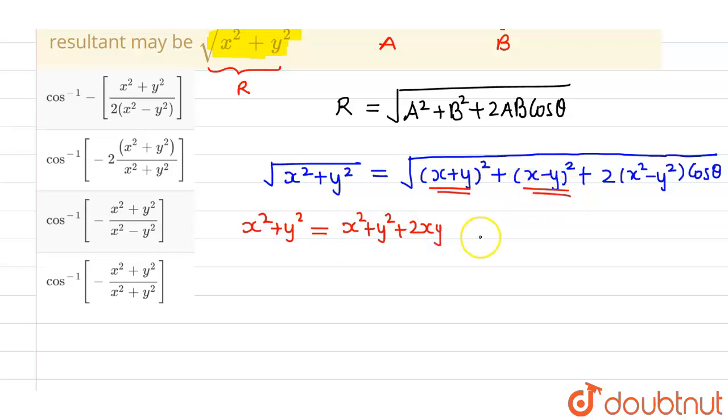Again, if I expand this particular, then I will be getting x²+y²-2xy, and this is as it is, which is 2(x²-y²) cos θ.